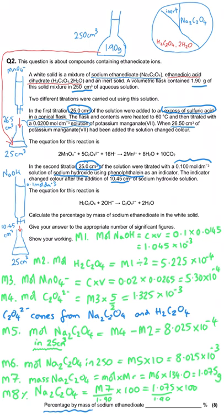The percentage of sodium ethane dioate in the original sample is 1.075 ÷ 1.90 × 100 = 56.6% (to three significant figures). That's the end of this question and the end of the video — I'll be back soon with another question walkthrough.